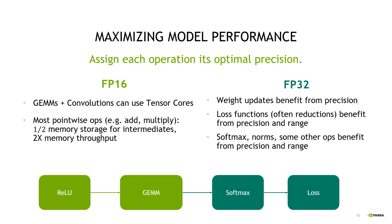To summarize: it's beneficial to match operations that are FP16-friendly with FP16 precision and FP32-friendly operations with FP32 precision. For example, you want your matrix multiplications and convolutional operations in FP16 to take advantage of the tensor cores designed specifically for that task, and you want your weight updates carried out in single precision for the benefits of FP32. The key point is that Automatic Mixed Precision — AMP — can do all of this for you automatically, without you having to worry about it.